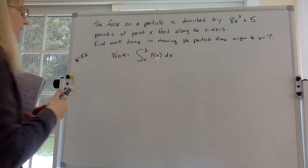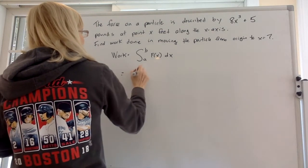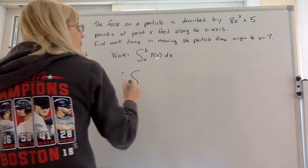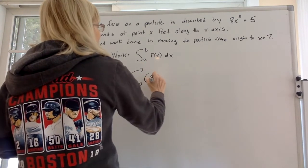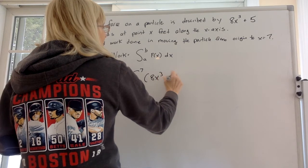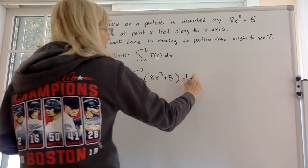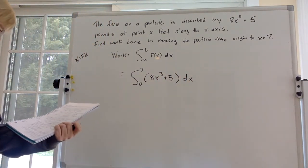So what do you got to do? Well what are we going through for x? We're going from 0 to 7. What's the force? 8x cubed plus 5. The distance that we're moving is dx. That's all this is. It's a simple integration.